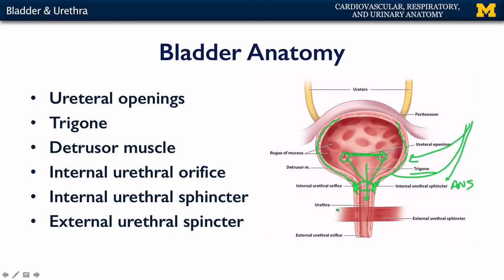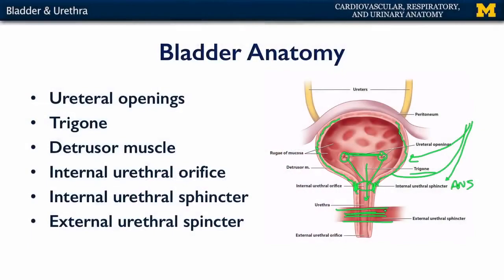Distal along the urethra, after the internal urethral sphincter, we have the external urethral sphincter, which is a collection of skeletal muscle that surrounds the urethra. The external urethral sphincter is somatomotor, so you have conscious control over it. This is what becomes active when you feel the need to urinate — you are essentially clenching this muscle so as to occlude the flow of urine through the urethra.